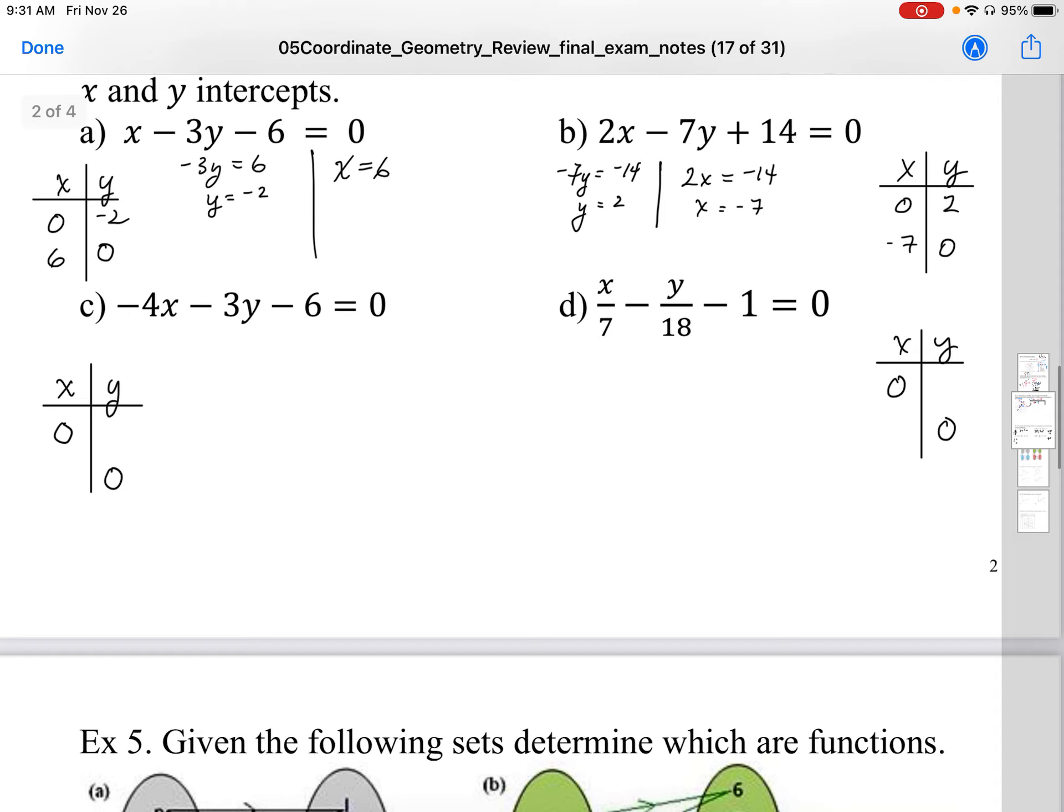We can continue on with these ones. Substitute in x is 0, I get negative 3y. Add 6 to both sides, y equals negative 2. And then plug in y is 0, so I get negative 4x minus 0 minus 6. I'm going to add 6 to both sides, divide both sides by negative 4, I get negative 3 over 2 when I simplify that fraction.